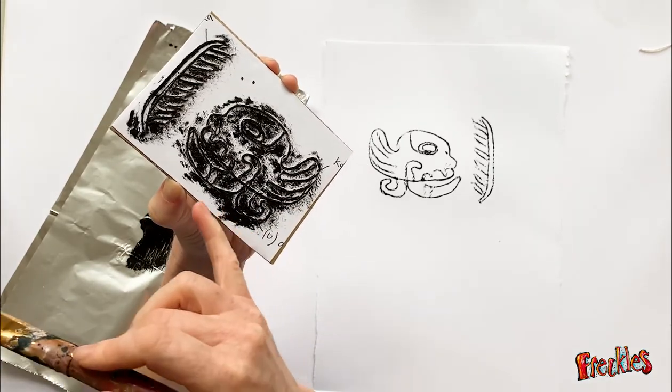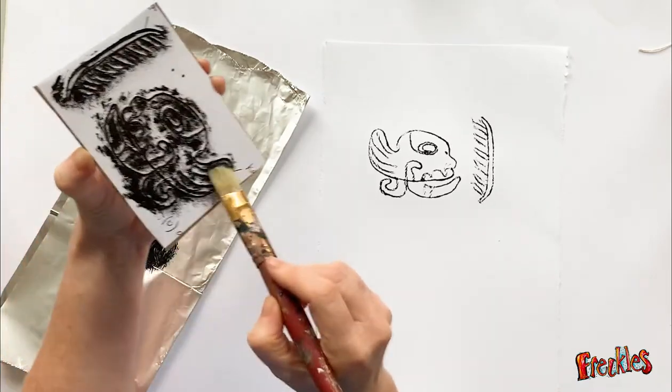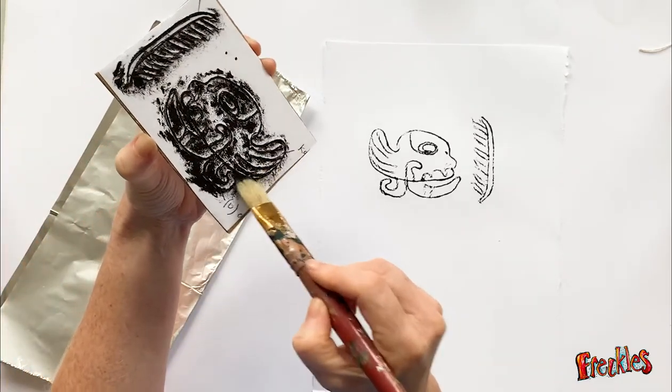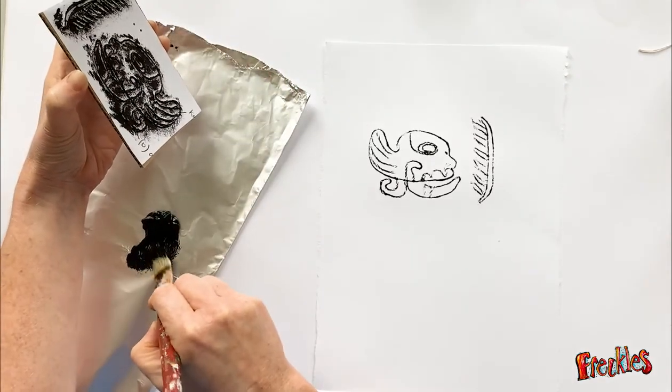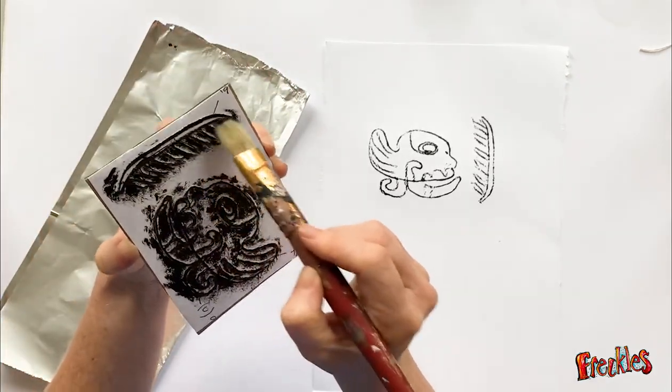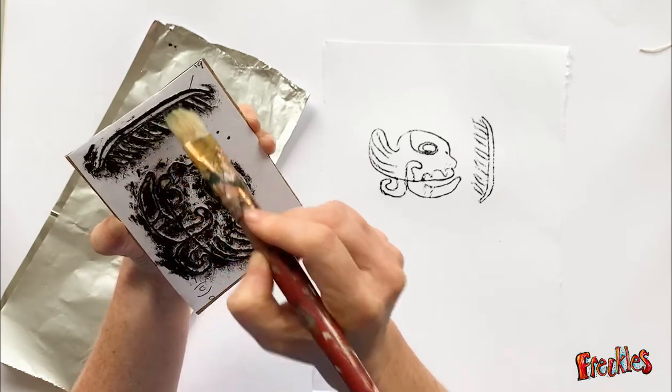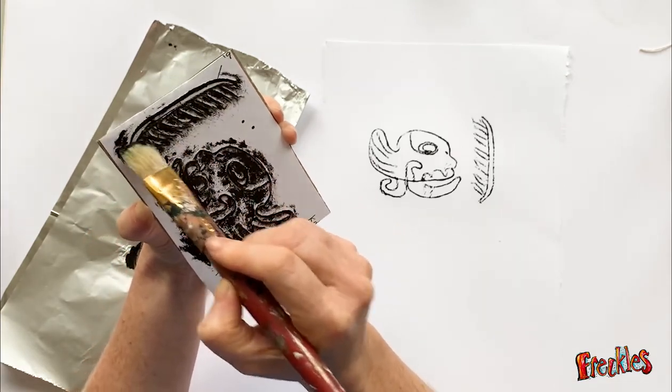If you get big blobs of paint on the board, they will show through. But the great thing about this is you now have this board and you can print over and over and over again.